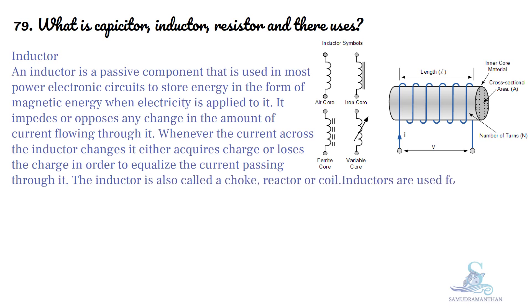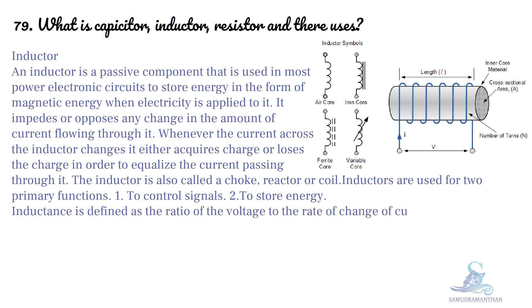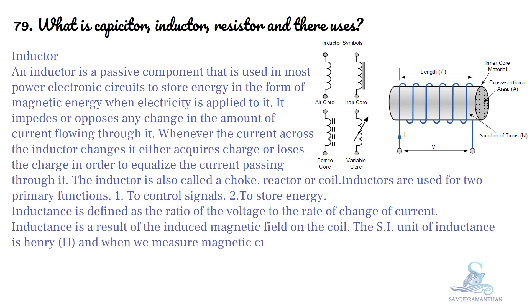Inductors are used for two primary functions: to control signals and to store energy. Inductance is defined as the ratio of the voltage to the rate of change of current. Inductance is a result of the induced magnetic field on the coil. The SI unit of inductance is Henry and when we measure magnetic circuits, it is equivalent to Weber per ampere. It is denoted by the symbol L.